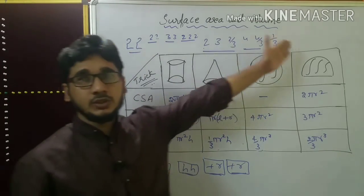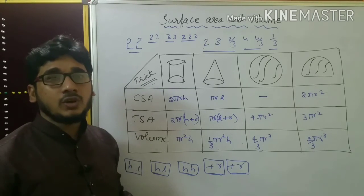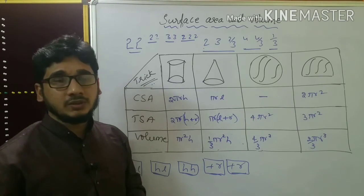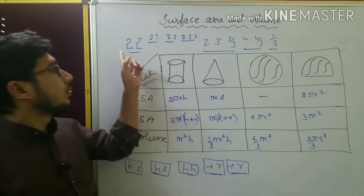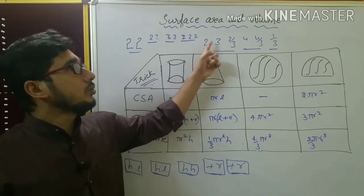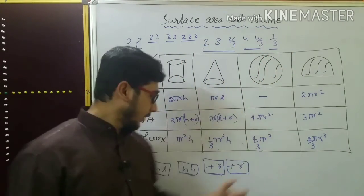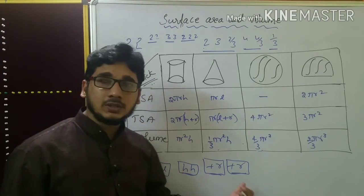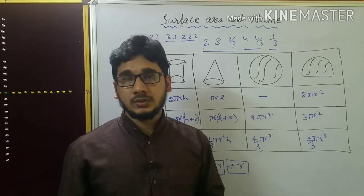If you are unable to say the rhythm of this poem, you can pause and replay the video and listen again. The complete poem one more time: two, two, square, square, cube, cube, square, square, square, two, three, two by three, four, four by three, one by three, h, l, h, l, h, h plus r, plus r, plus r. That's it — we will go to the next video, thank you!